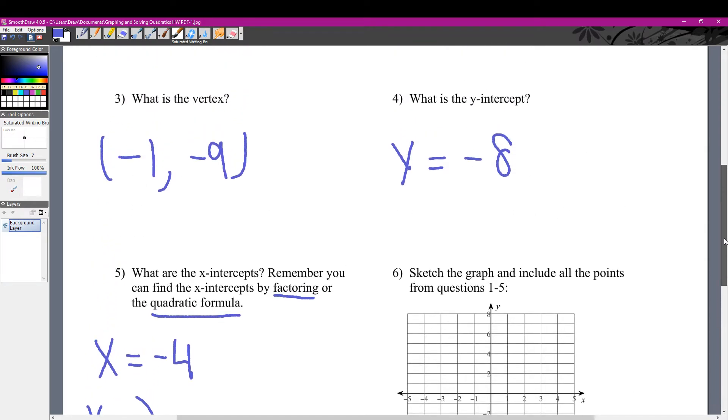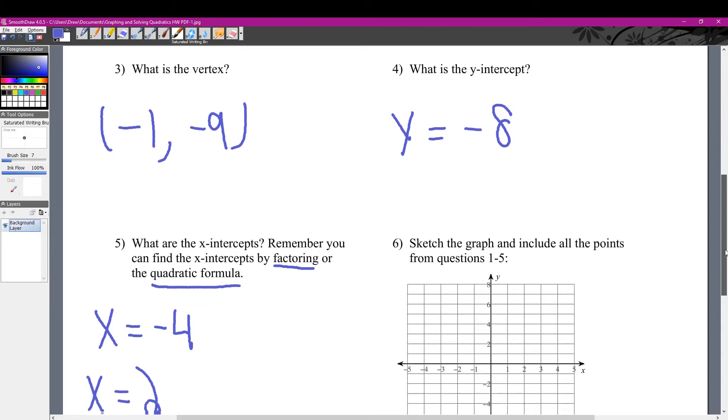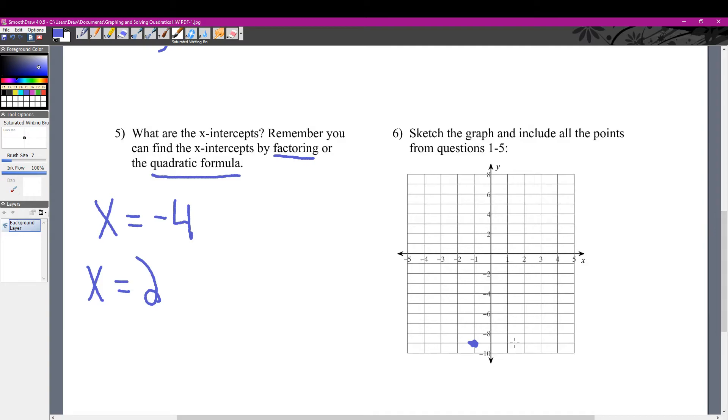The next point we can look at is from part 4, the y-intercept of negative 8. That means we could go to negative 8 on the y-axis and draw another point right there.